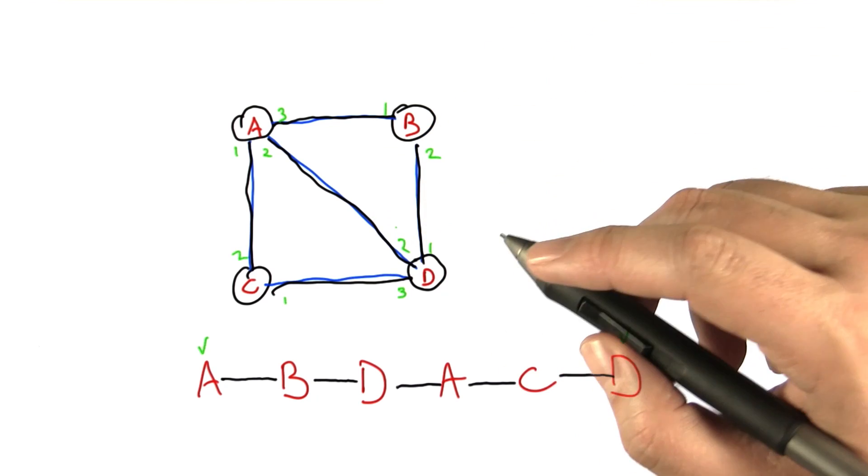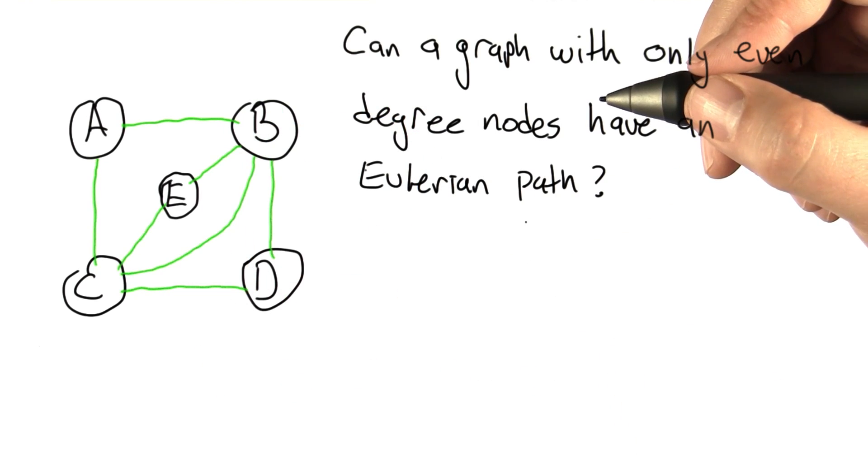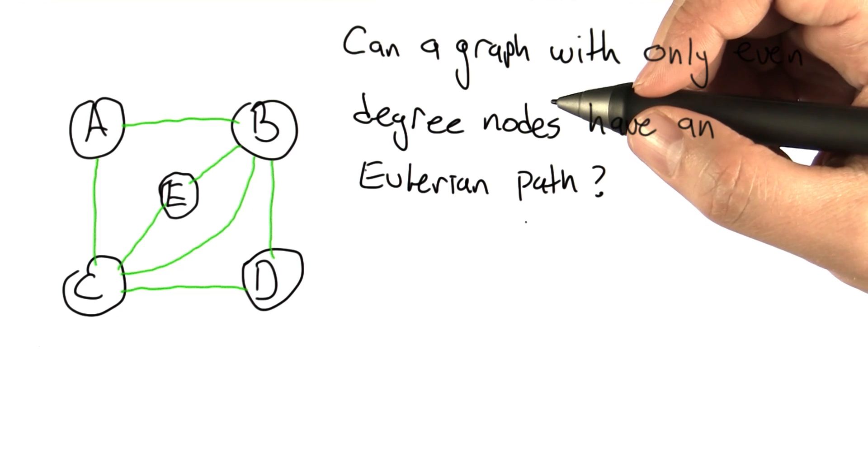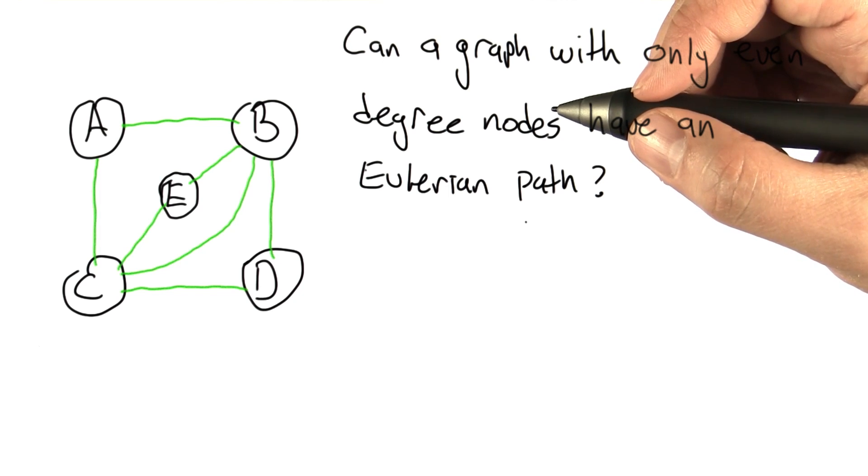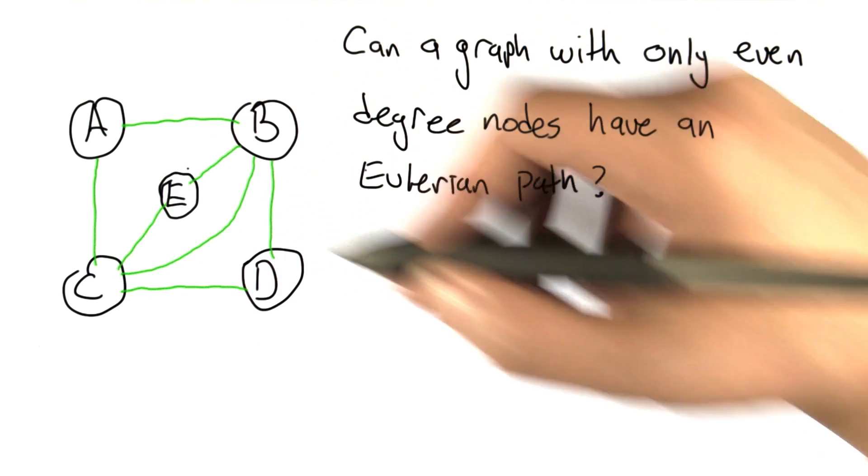Now, there's one exception to this. What if all of the nodes in the graph are even degree? Let's take a quick look at a special case here. Here's a graph with five nodes and the degree of all the nodes is even: 2, 4, 2, 4, and 2.